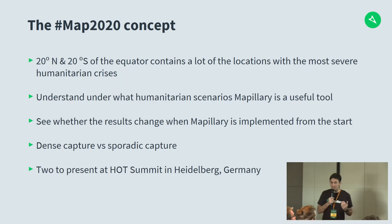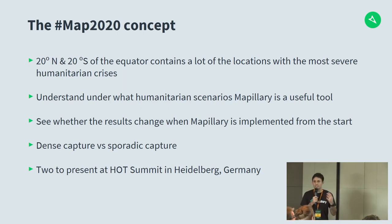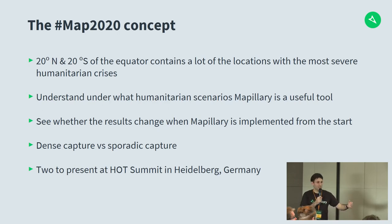The goals were understanding how Mapillary is useful in humanitarian scenarios, and encouraging dense capture over sporadic capture. We saw time and again people taking one photo per street and moving on — that's not useful from a computer vision or mapping point of view. You really want someone focused on capturing every street, and we tried to move contributors toward that using the tools we now have.